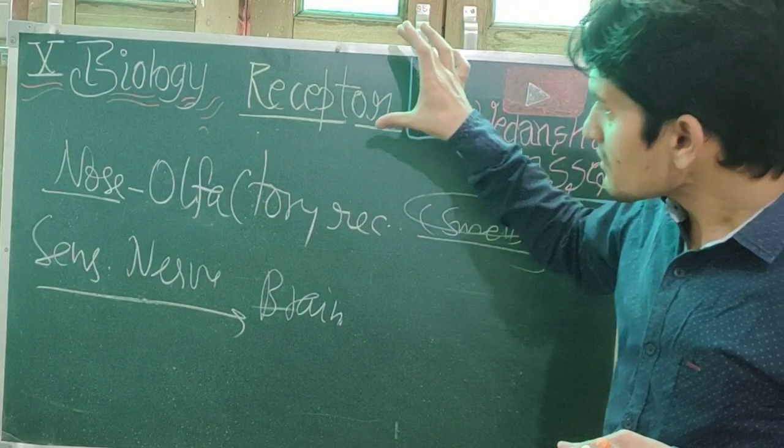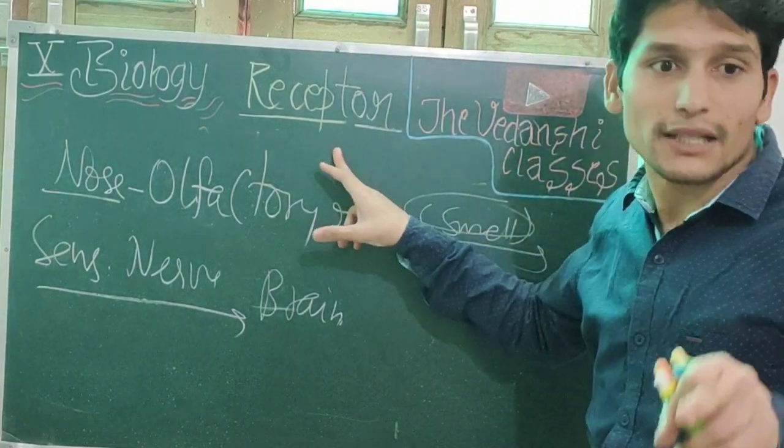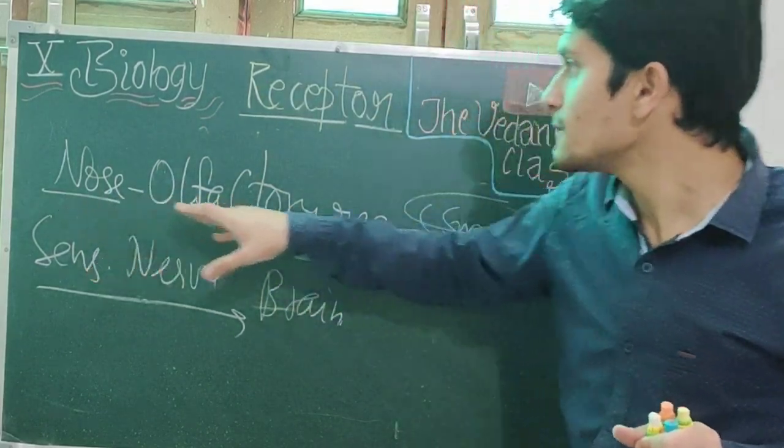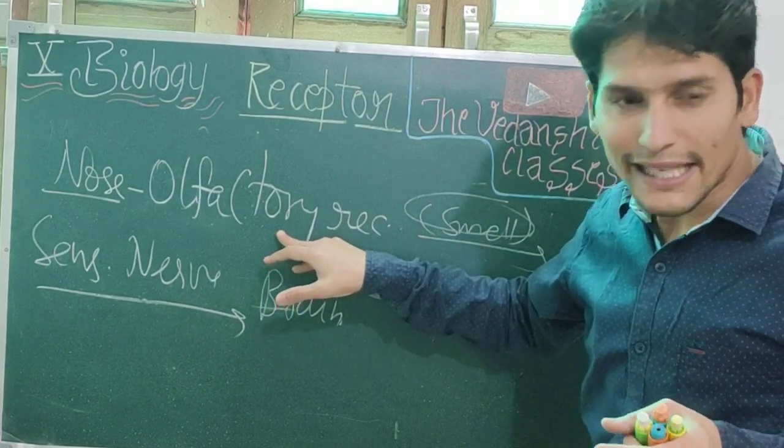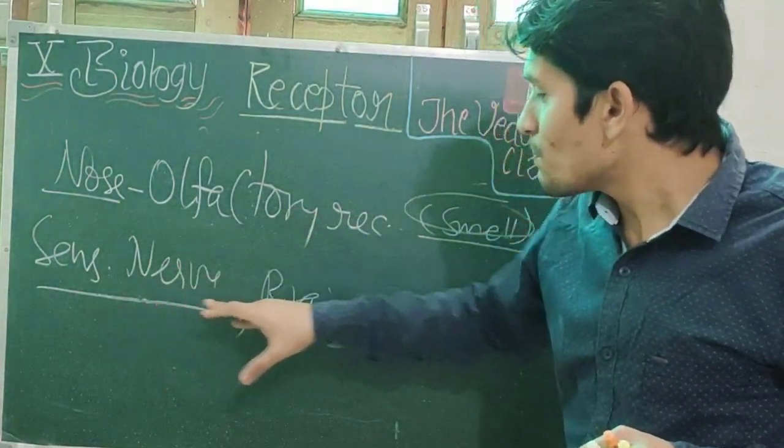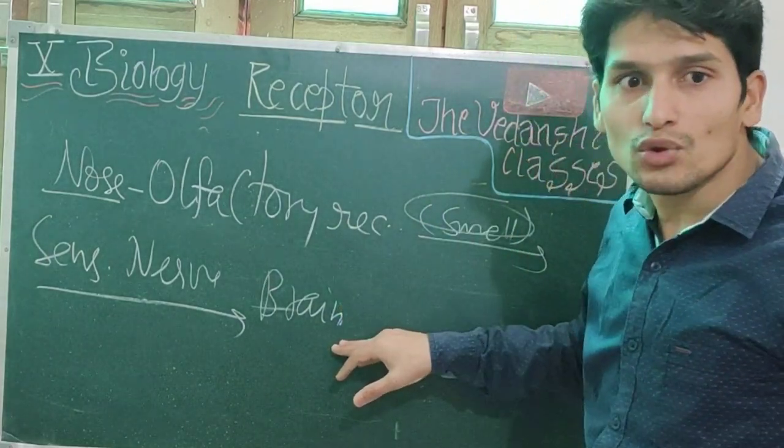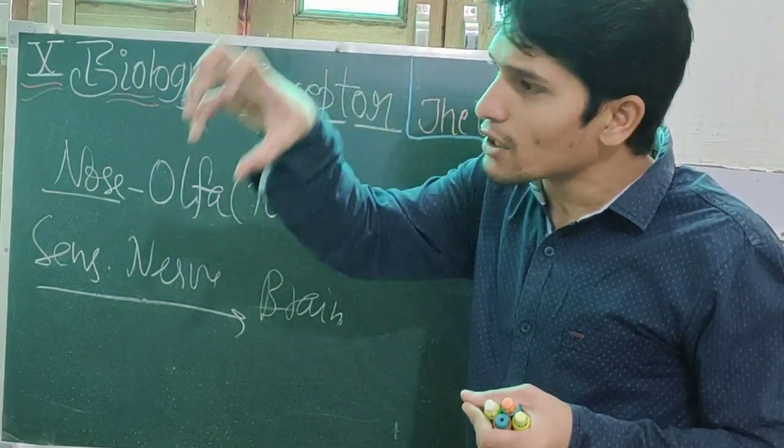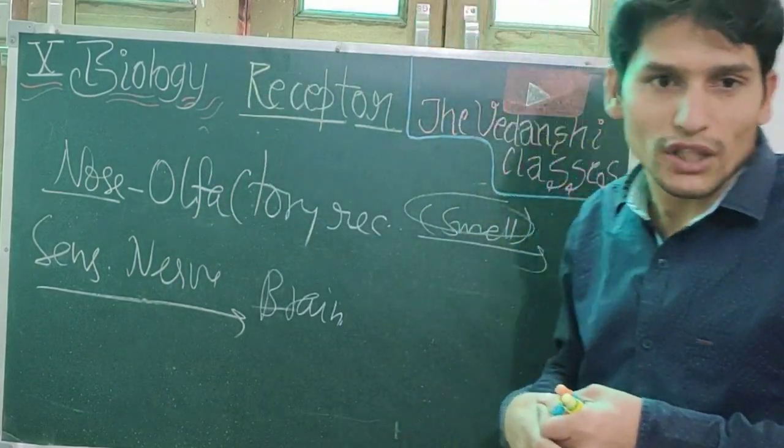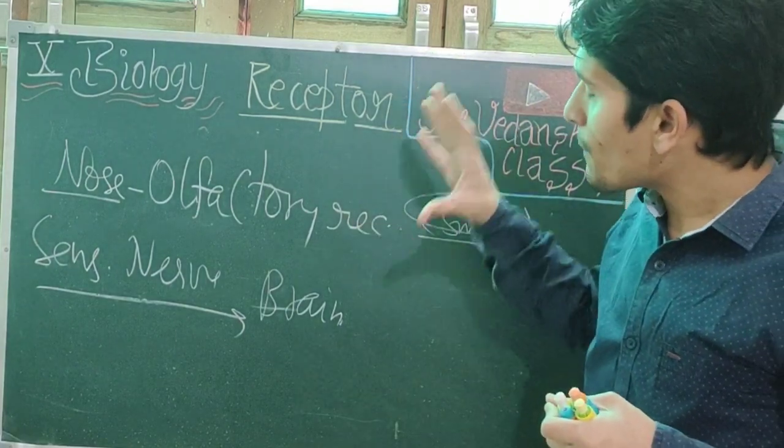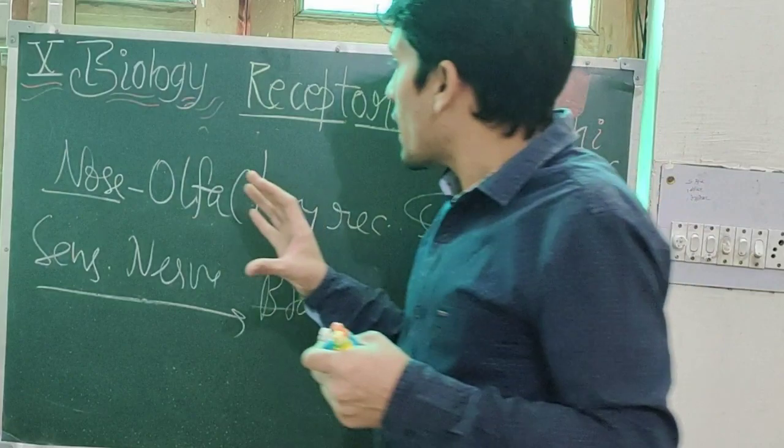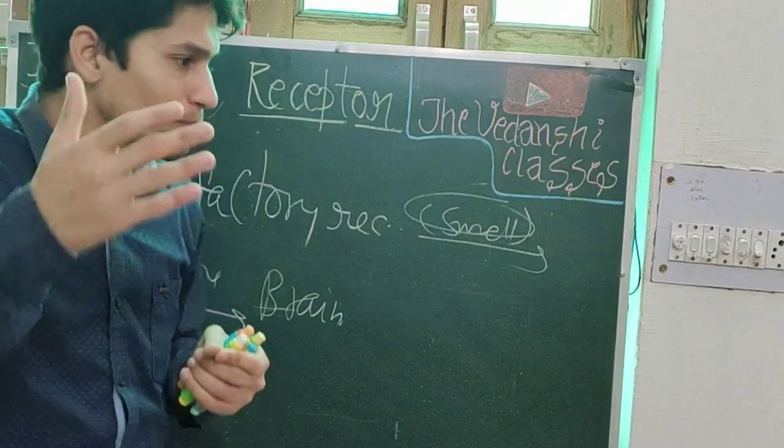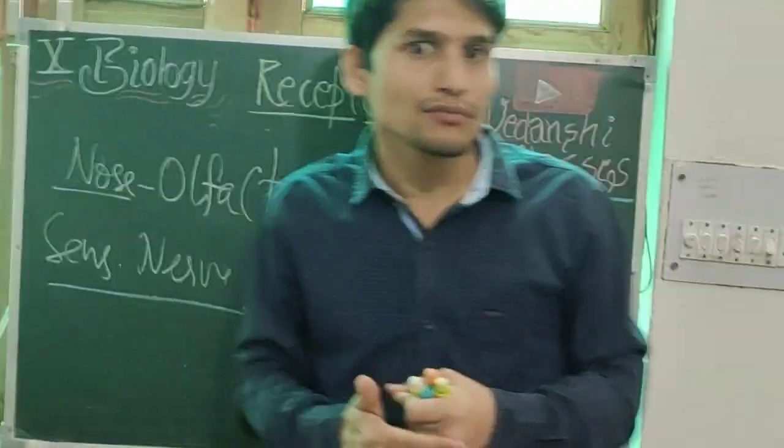Today we discussed receptors, which are very important for exams. We covered the mechanism through which messages go to the brain via sensory nerves, then orders come through motor neurons to muscles and organs to produce a response. Till now we've discussed the central nervous system and nervous coordination. We'll meet in the next topic in the next video. Thank you so much for watching.